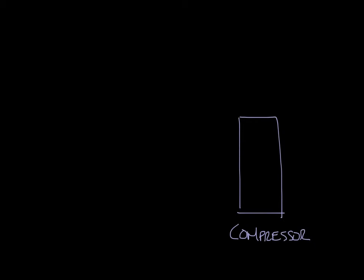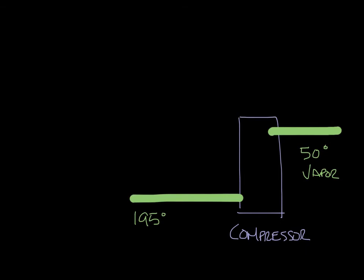We'll use the green lines to show the refrigerant in and out again. So in this case, we had 50 degree vapor coming in and what we have coming out would be about 195 degree high pressure vapor.